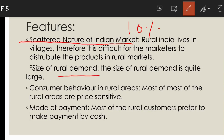The next feature is the size of rural demand. For example, when we look at FMCG products like soap, washing powder, tea, etc., rural areas also demand these things, so the size and demand for FMCG products is very large. Similarly, demand for durable products like refrigerators and TVs also shows high potential in rural areas, making rural marketing quite feasible.